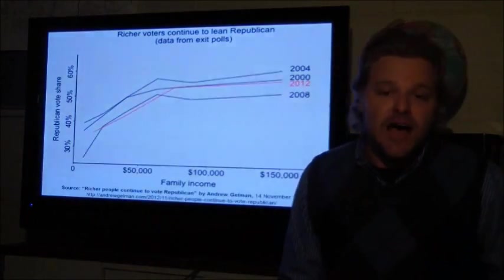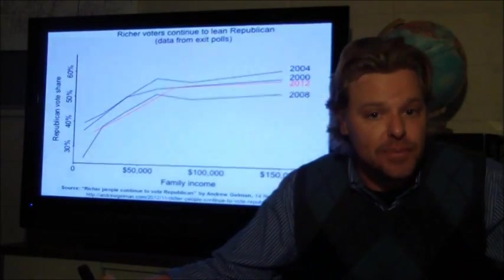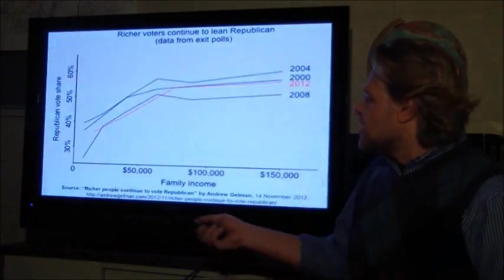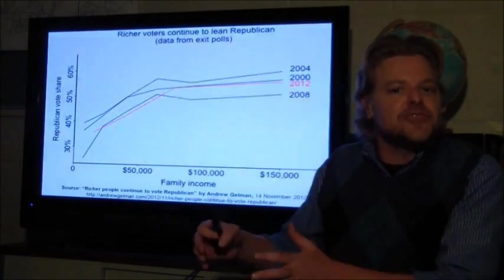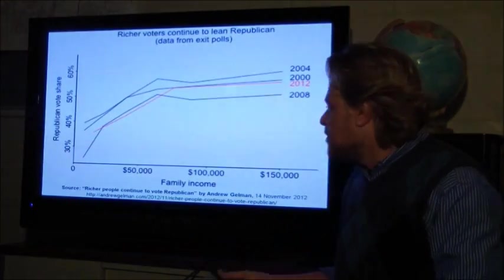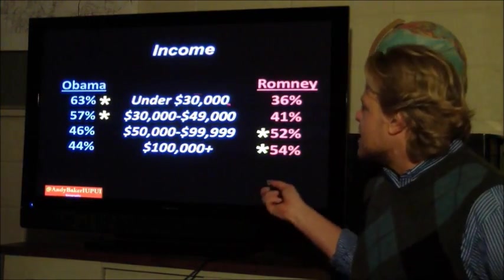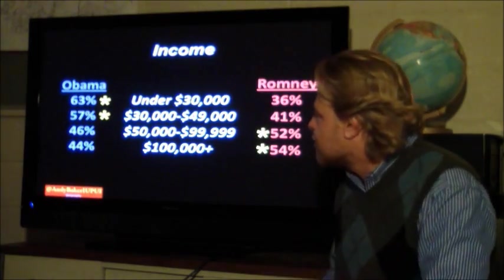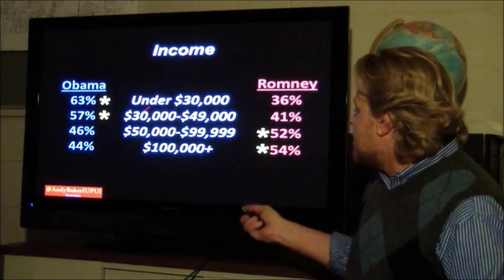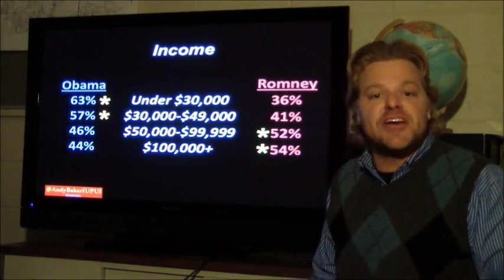The key idea here is: as you increase in wealth, you're more likely to vote Republican. The inverse is also true — the lower income you are, the more likely you are to vote Democrat. That plays out in pretty much the last four or five elections. Looking at specific groups at the county level, income under $30,000 — Obama won 63% to 36%. But as you increase in income, you're more likely to vote Republican. That's the first characteristic we're going to look at.